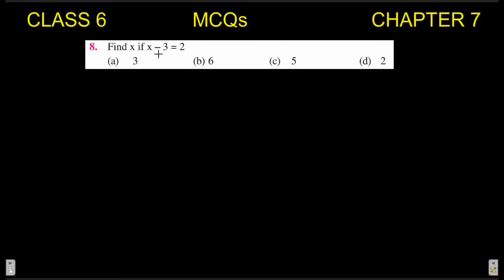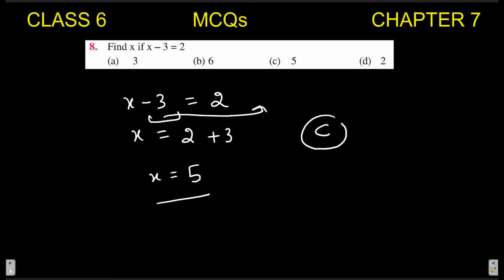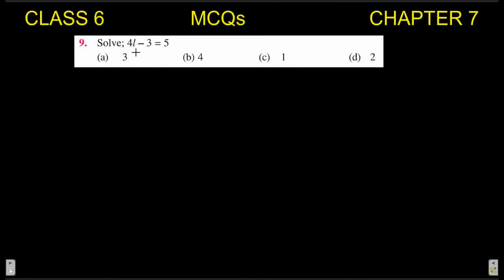Next MCQ: find x if x − 3 = 2. Solve this using the transposition method. Shifting −3 to the right-hand side, it becomes +3. So x = 2 + 3 = 5. Five is in option C, so C is your correct answer.